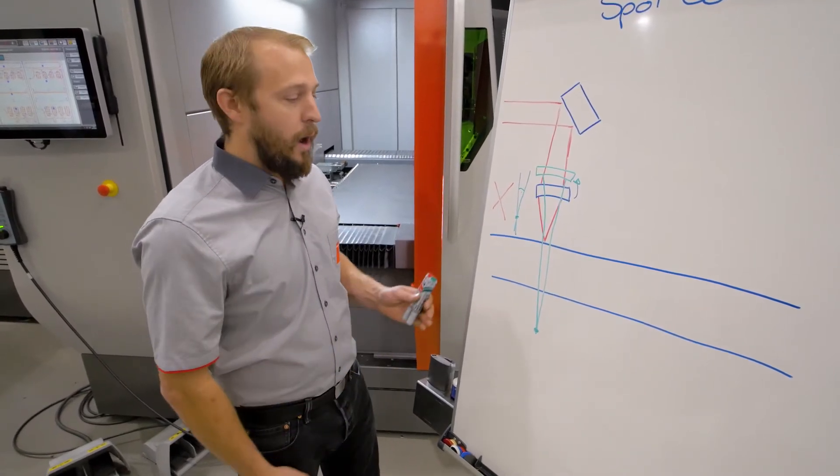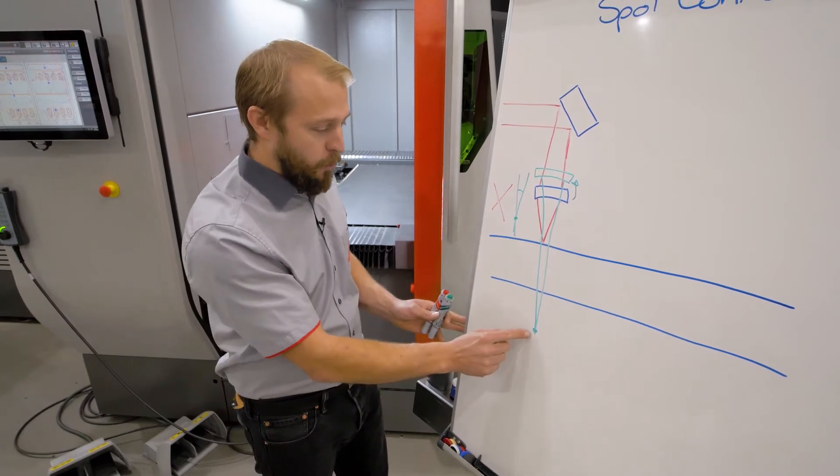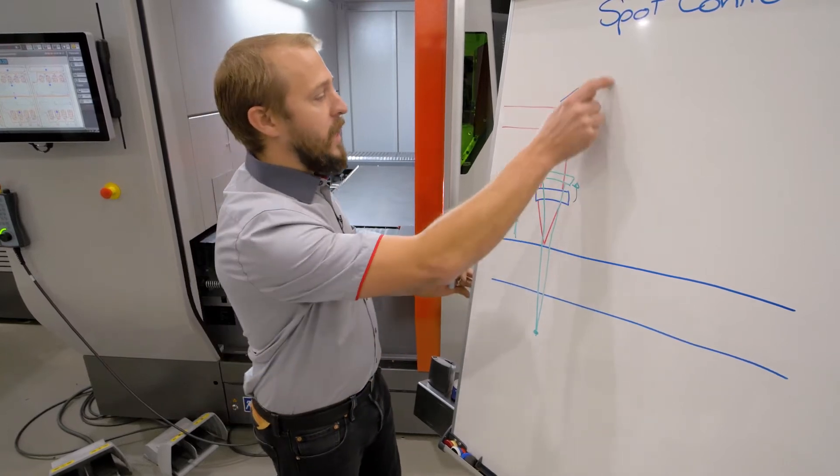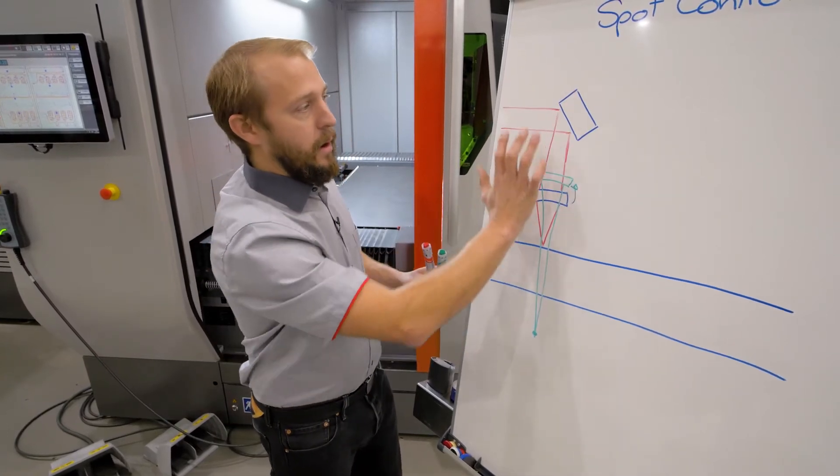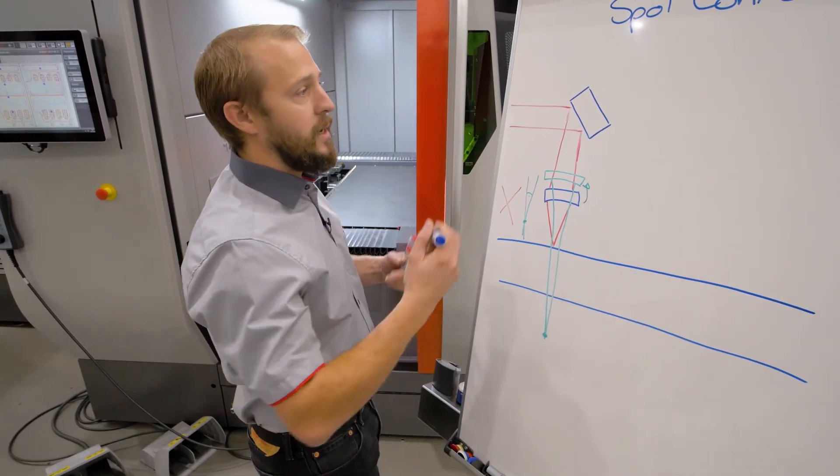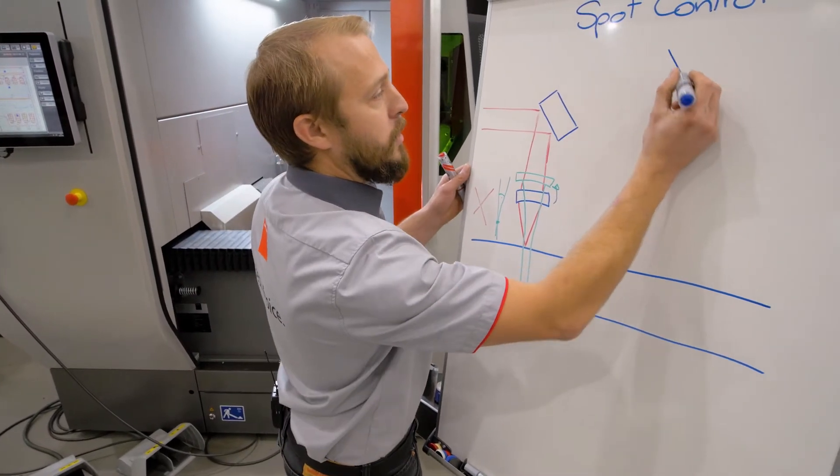But as you can see, now we have a problem because our focal point is that low, but it should be here. So what we are doing, we will move that entire part of the cutting head up. Let's make a quick redrawing of the entire thing to see how it will look.